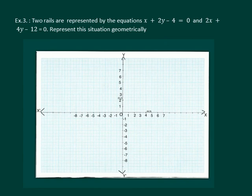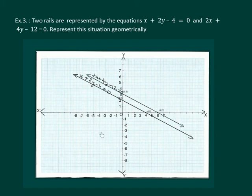We plot the coordinates of the point for the first equation 0, 2 and 4, 0 and join them. We get the graph of x plus 2y minus 4 equal to 0. Similarly let us plot the graph of 2x plus 4y minus 12 equal to 0. We observe that the lines do not intersect at any point and they are parallel.